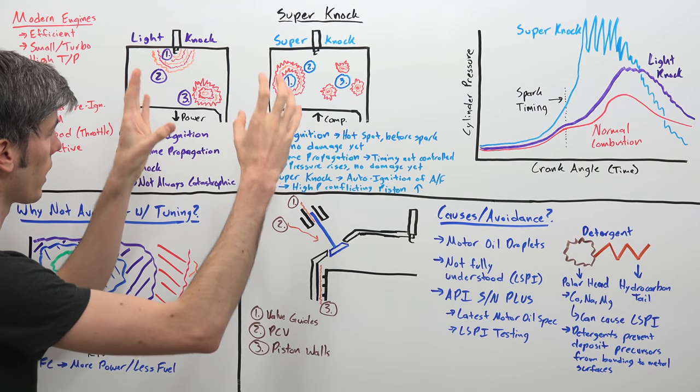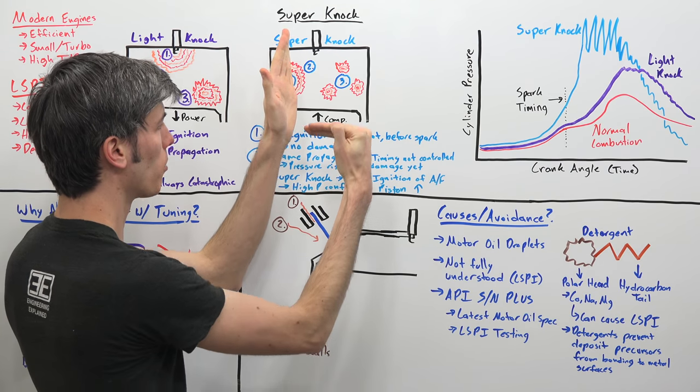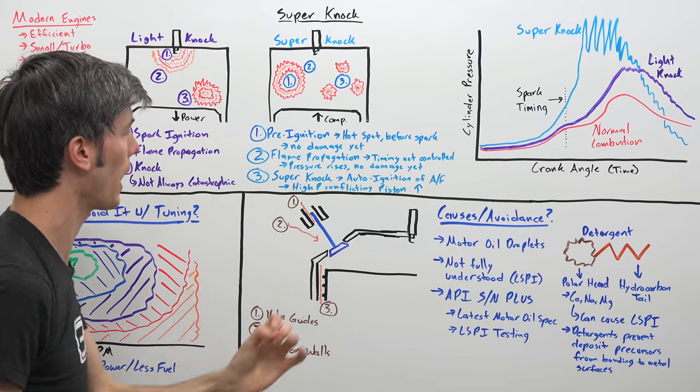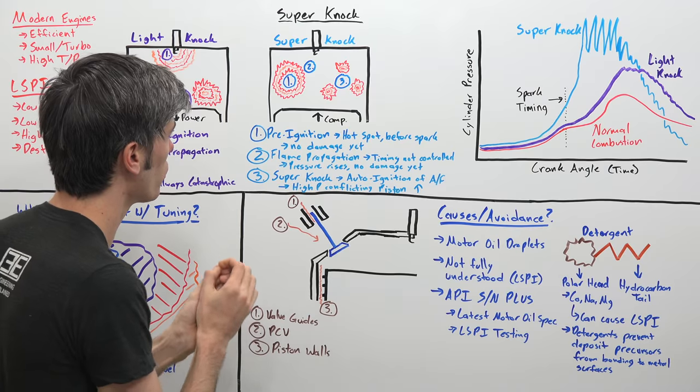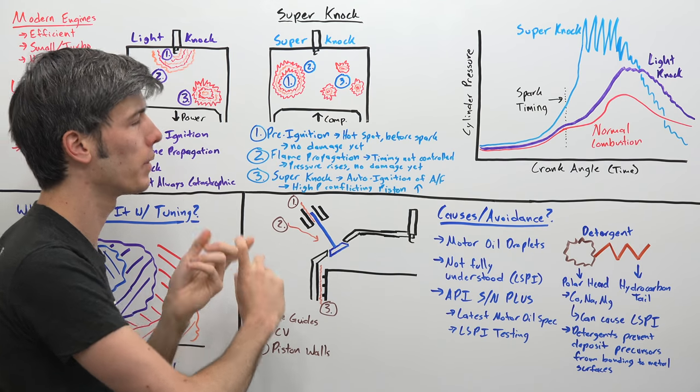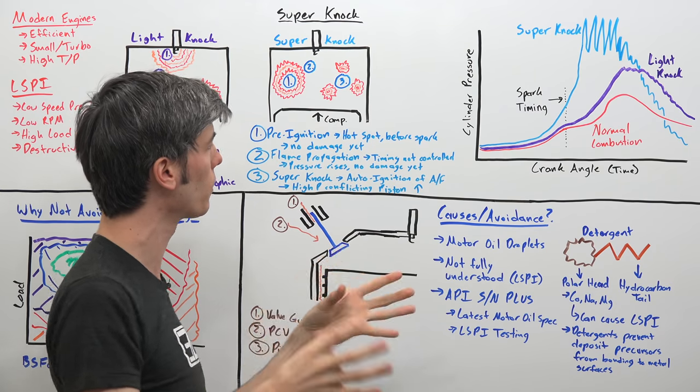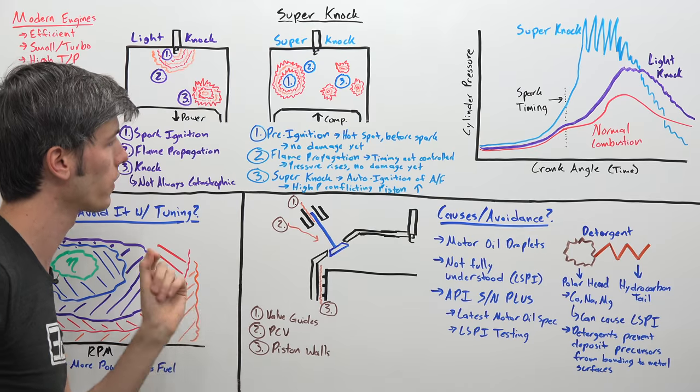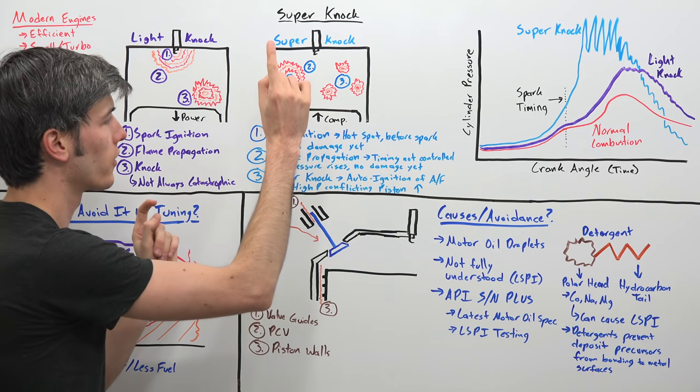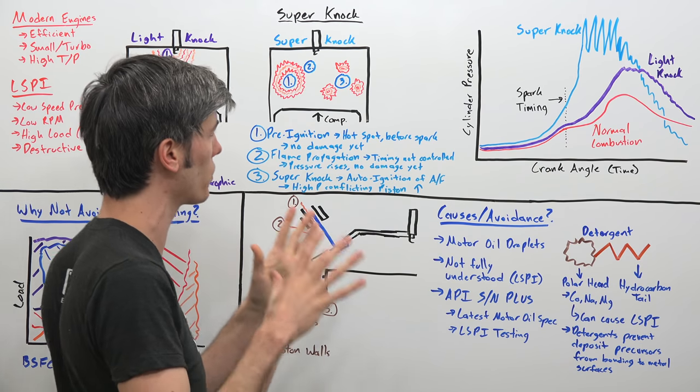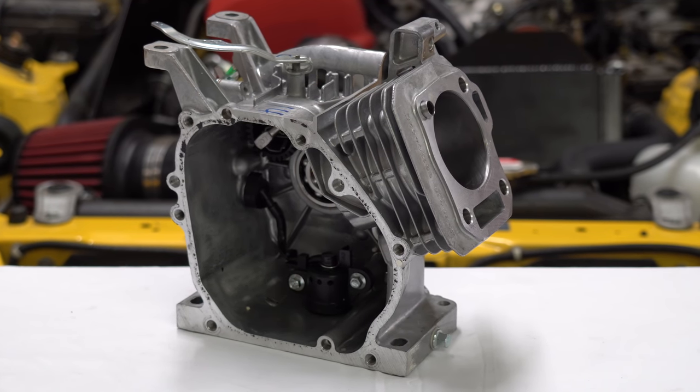Super knock, on the other hand, can be quite destructive. So what's happening? You have that intake stroke, you now have your compression stroke, and before your spark plug ever fires, you have a hot spot somewhere in this cylinder. Something causes ignition to occur. That could be an oil droplet, it could be a carbon deposit, something within this cylinder. And again, it's not actually fully understood what is always causing this pre-ignition to occur. But this is that LSPI event, low speed pre-ignition, so that's step number one. It doesn't necessarily mean that damage is going to occur yet. It's not necessarily destructive just because you have LSPI occurring.